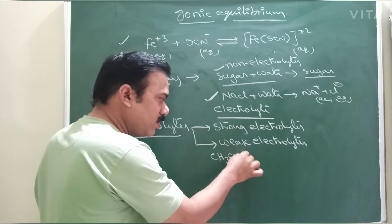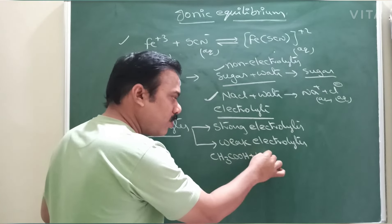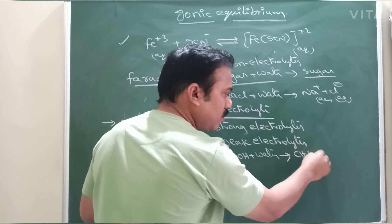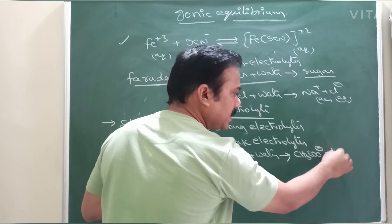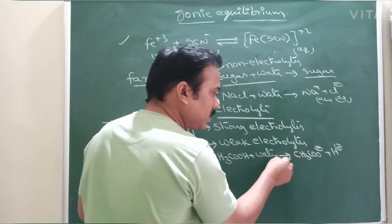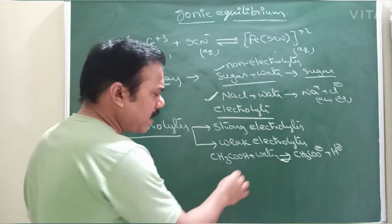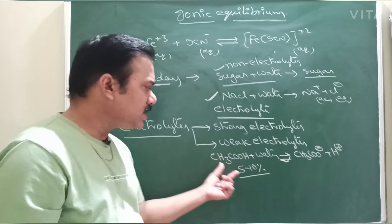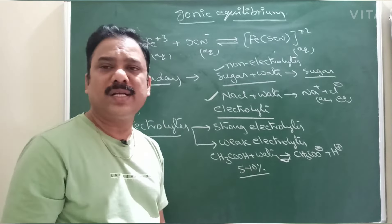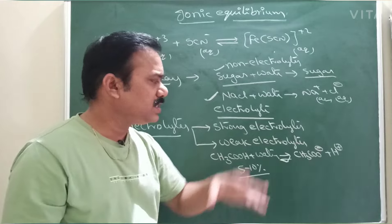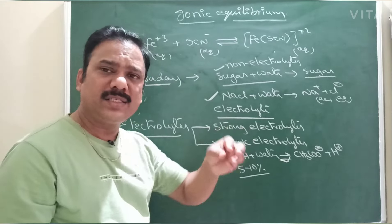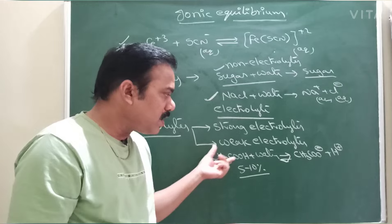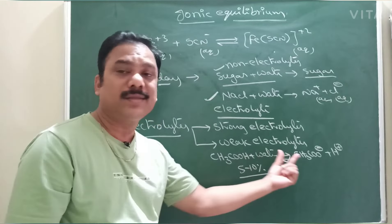For a weak electrolyte, take acetic acid CH₃COOH. When dissolved in water, only a few CH₃COO⁻ and H⁺ ions are produced. After that equilibrium reaches — hardly 5 to 10 percent dissociates. So out of 100 molecules, only 5 to 10 molecules of CH₃COO⁻ and H⁺ dissociate; remaining molecules stay as CH₃COOH. These kinds of compounds are called weak electrolytes. They do conduct electricity, but only a little.